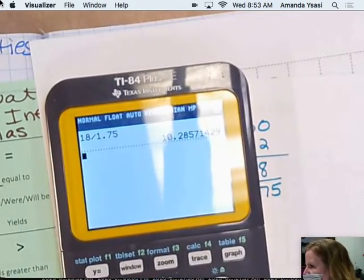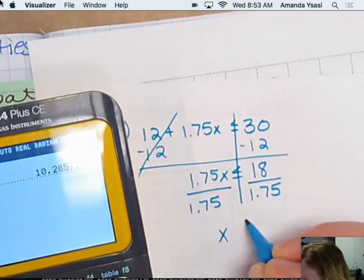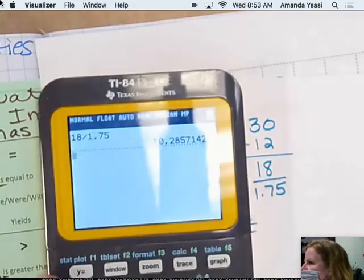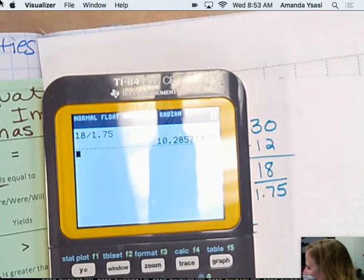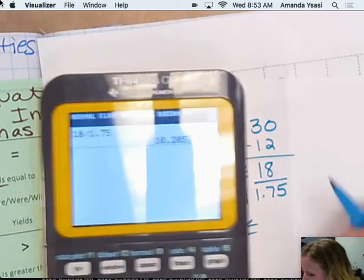What would we round this to? $10. Well, can you have... These are talking about games, right? Number of games. So we would just have it as $10.